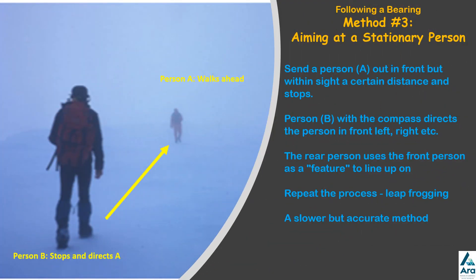The third method of following a bearing is aiming at a stationary person. This is where you send someone ahead of you, and the person in the back has the compass. The person in front needs to go a certain distance away where the person in the back can still see and hear them, and tells them to stop. Then, using the directional travel arrow on the compass, tells the person at the front whether they go left or right, or whether they're in the right spot.